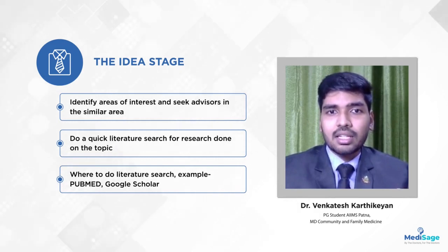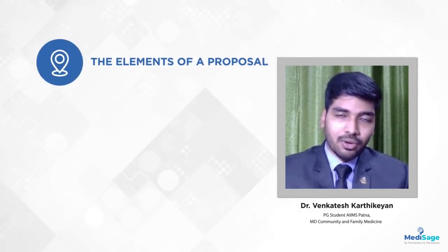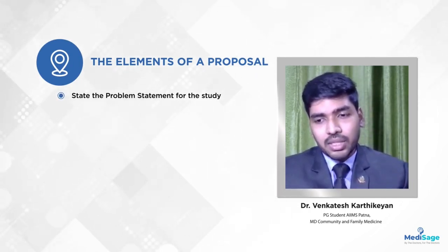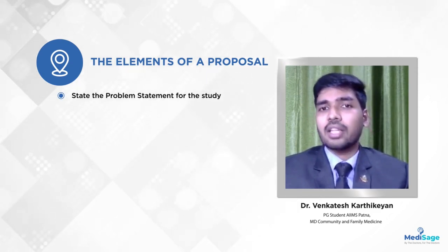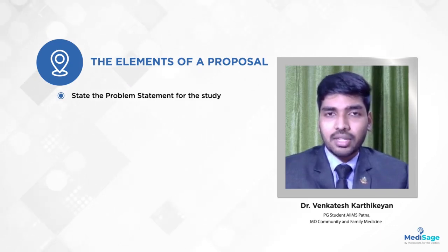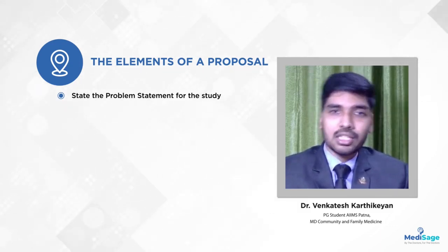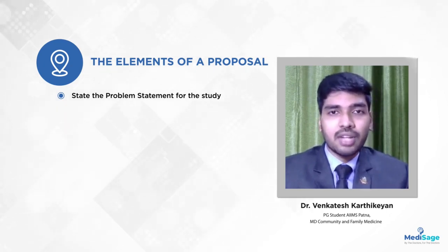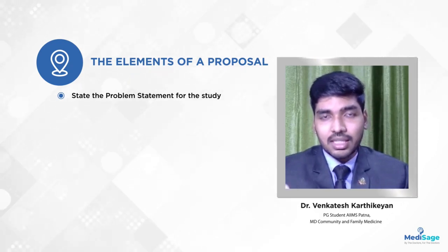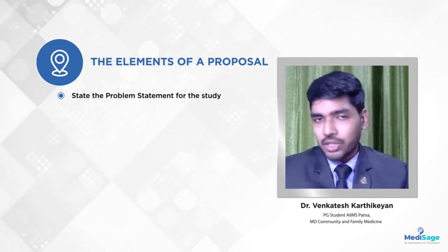Once you are done with the literature review, you should prepare your proposal. The first step is to identify the problem statement. For example, if you are doing something related to diabetes, you should mention the prevalence of diabetes across the world, why it is significant, the prevalence in India, then in your local state — for instance, Bihar — and if data is available for your particular city like Patna, mention that prevalence as well.